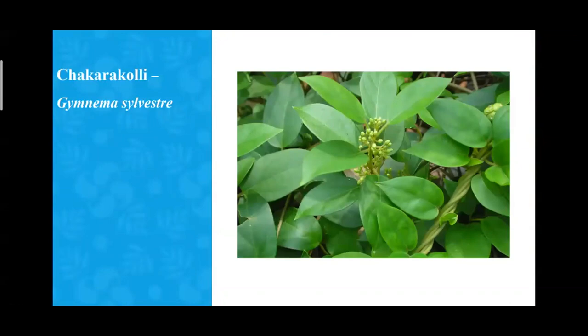Chakra polygymnia sylvestra — when you chew the leaf of this plant, your sweet taste buds become numb and you cannot perceive sweetness. If you chew sugar or toffee, it feels like chewing sand or wax. It is therefore considered a killer of Prameha, having the name Chakra kuli — meaning one that destroys sweetness.